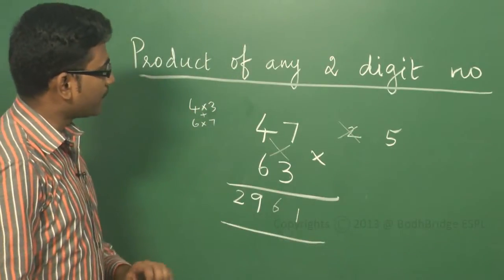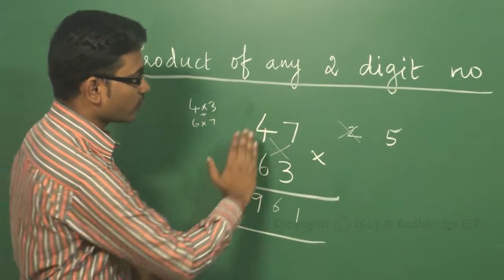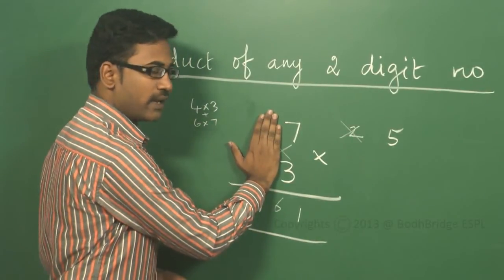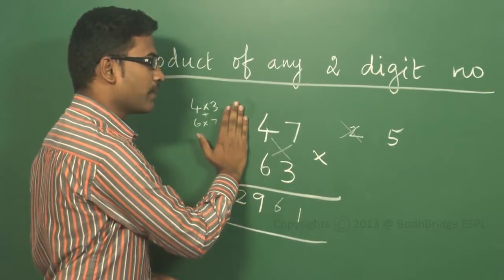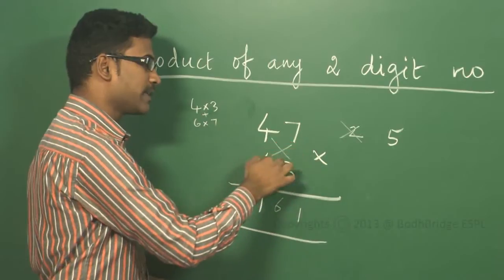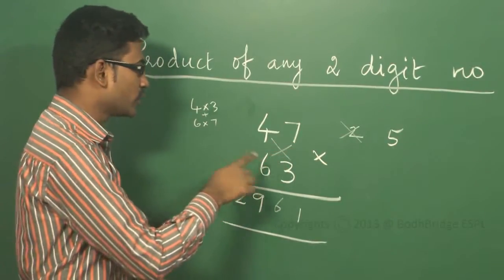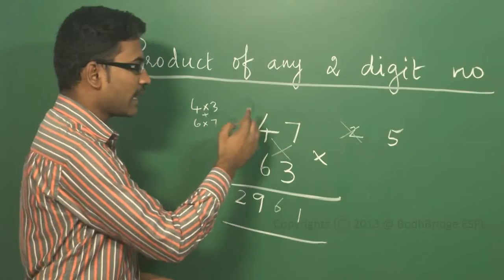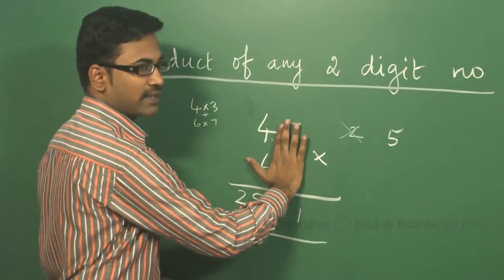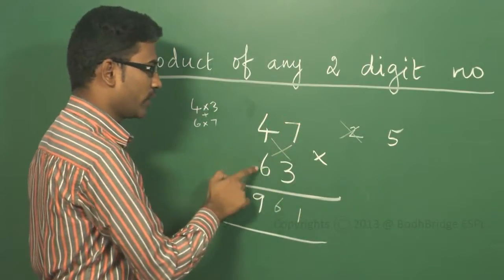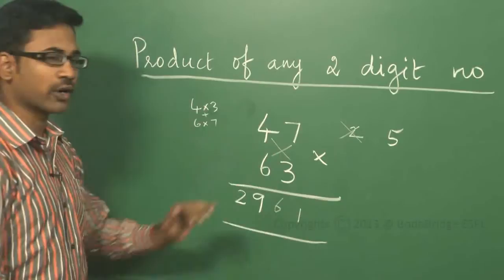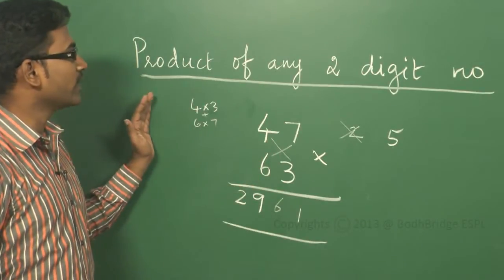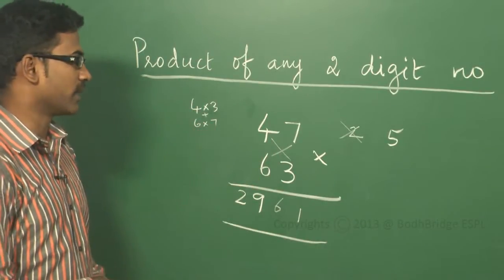To repeat the steps: the first step is multiplying the first column, 7 into 3. The second step is to cross multiply and add — 4 into 3 plus 6 into 7. The last step is the last column, 4 into 6, adding carry accordingly. This is the procedure to calculate the product of any two-digit number.